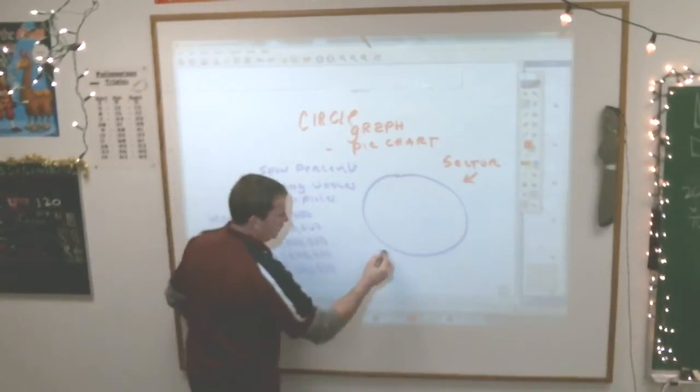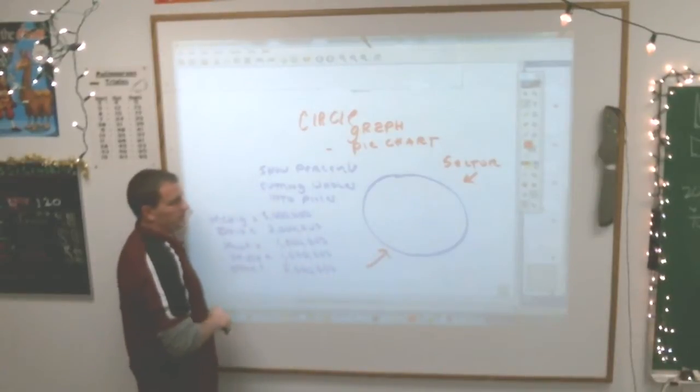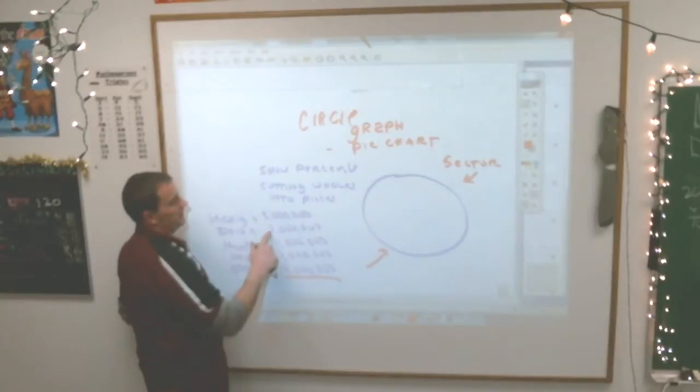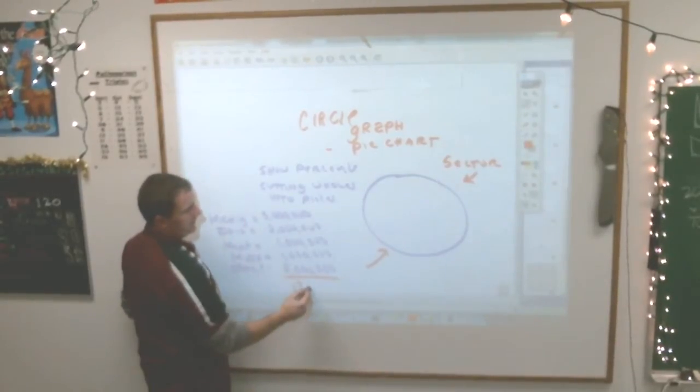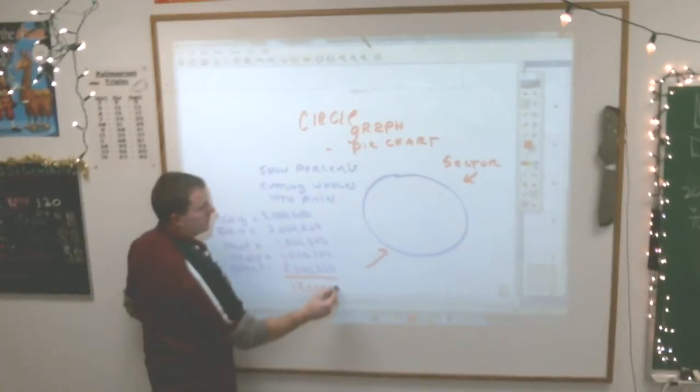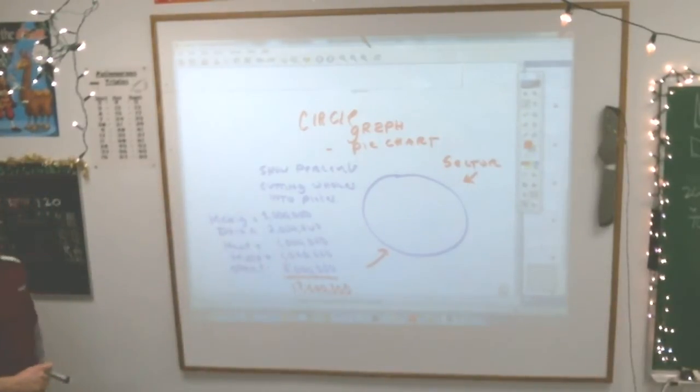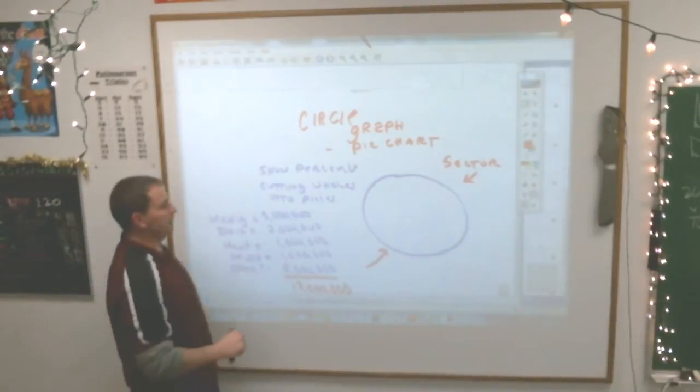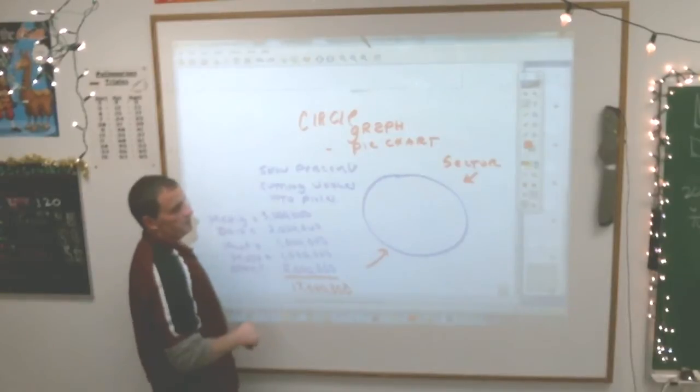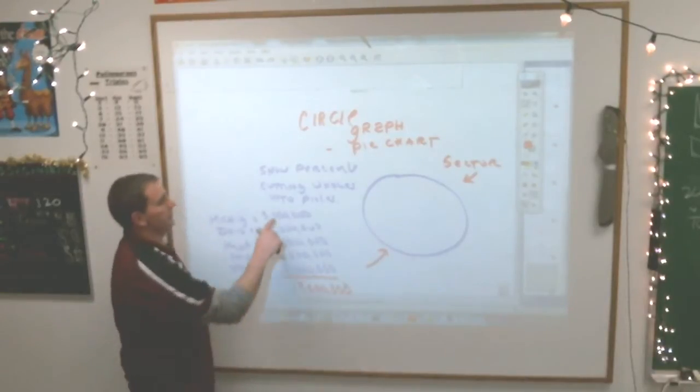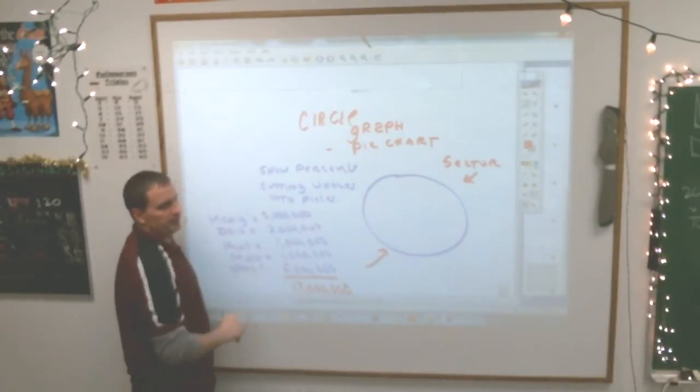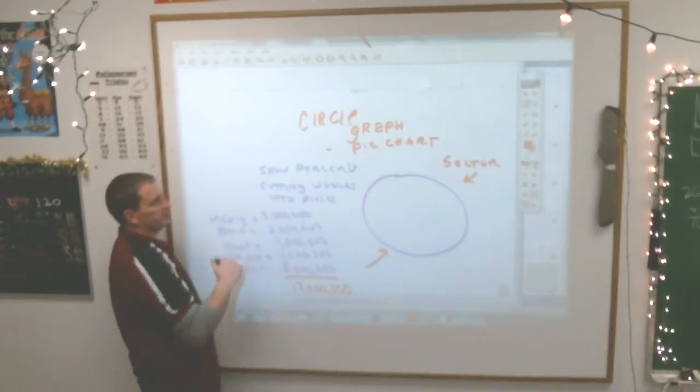How do I figure out what piece of the pie Michigan should get? Alex? By first adding all the numbers together. All right. We need to know how many total cars that whole circle stands for. And how many total cars is this? Twelve. That whole circle stands for twelve million cars.